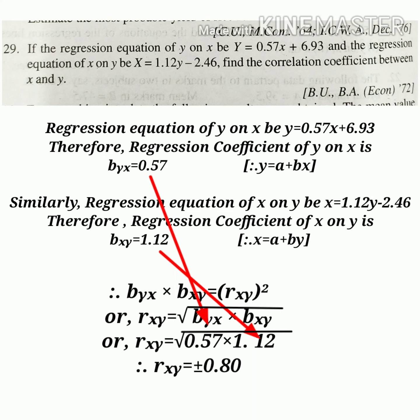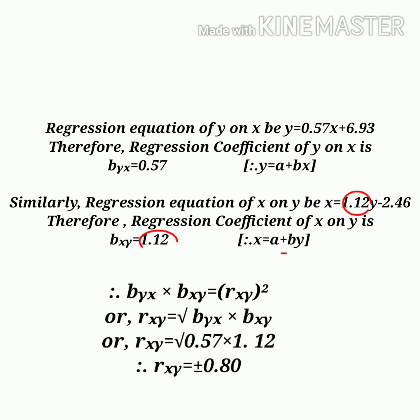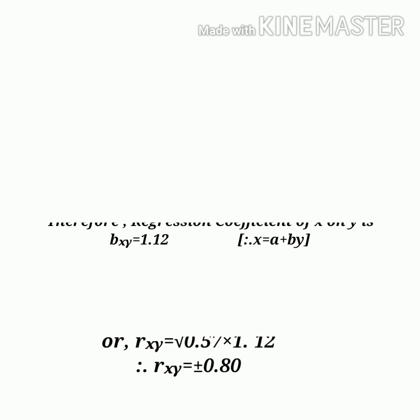For your understanding, the general form of regression equations is y = a + bx and x = a + by, so that you can understand what is the coefficient of x on the right and what is the coefficient of y on the right. In the first equation, the coefficient of x on the right is 0.57, and in the second equation, the coefficient of y on the right is 1.12.